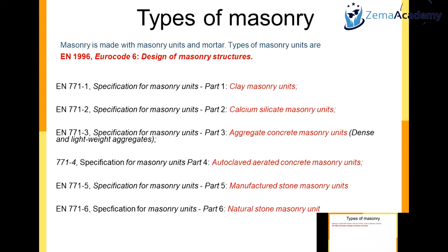The different types of masonry we're going to cover today are as follows. Whenever we're designing with masonry, Euro Code 6 is the standard to refer to — it provides all the calculations and requirements needed. The different types of masonry units are: clay masonry units, calcium silicate masonry units, aggregate concrete masonry units, clay aerated concrete masonry units, and manufactured stone masonry units. Each form of masonry falls under specific Euro Codes, and all specification information can be found within those Euro Codes.